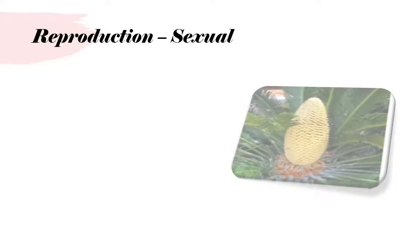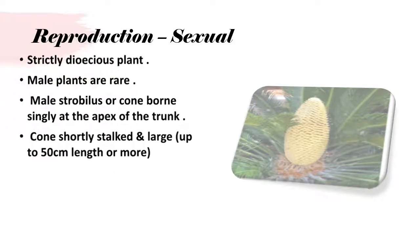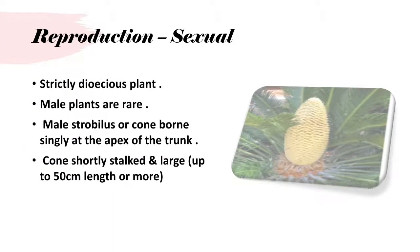Sexual reproduction: Cycas is a strictly dioecious plant. Male plants are rare. The male strobilus or cone is borne singly at the apex of the trunk. Cones are shortly stalked and large, up to 50 centimeters in length or more.